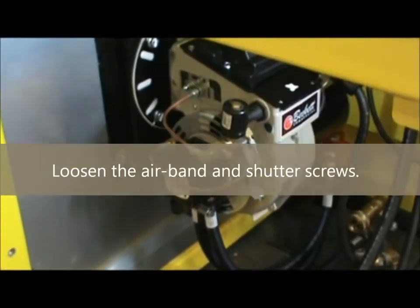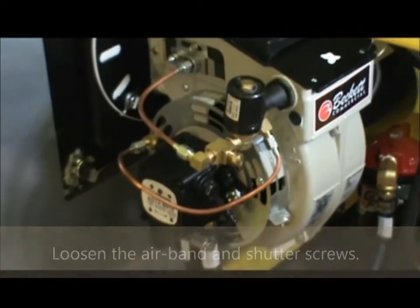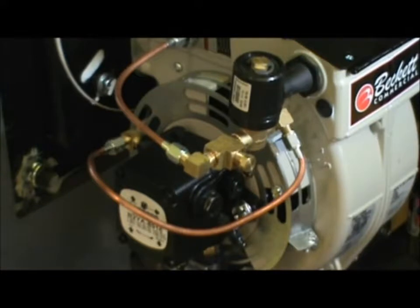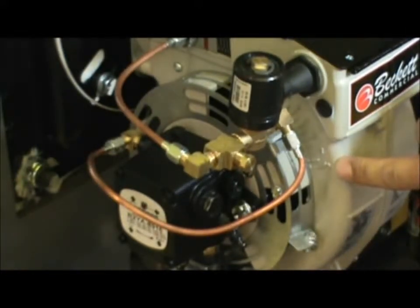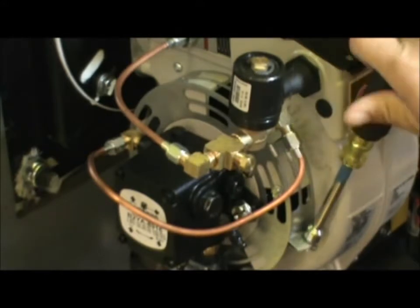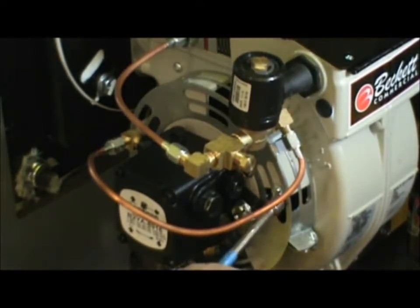Locate the air band, air shutter, and graduated numbers printed on the burner housing. Loosen the air band and air shutter screws using a 5/16th nut driver. Adjust the band and shutter to the desired set point.